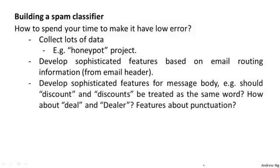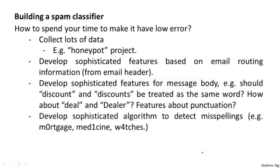Something else you might consider is to look at the email message body and develop more sophisticated features. For example, should the word 'discount' and 'discounts' be treated as the same word? Or should 'deal' and 'dealer' be the same word, even if one is lowercase and one is capitalized? Or do we want more complex features about punctuation, because maybe spammers use exclamation marks a lot more? Along the same lines, we might also want more sophisticated algorithms to detect and correct deliberate misspellings like 'mortgage,' 'medicine,' 'watches' — because spammers do this so that simple classifiers won't equate the misspelled word with the real word, making spam harder to detect.